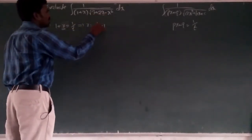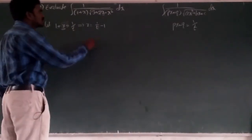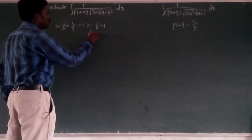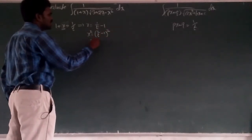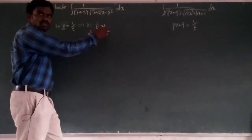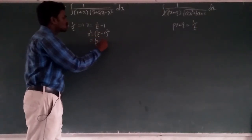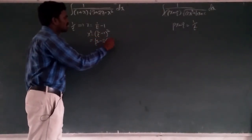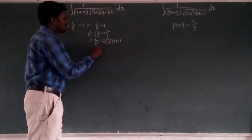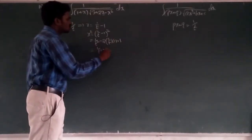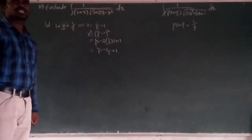So x value is 1/t − 1. What will be x squared? x² will be (1/t − 1)², in the form of (a − b)². So a² means 1/t², minus 2 × (1/t), plus b² means 1. Which is called 1/t² − 2/t + 1. This will be useful in the upcoming steps.